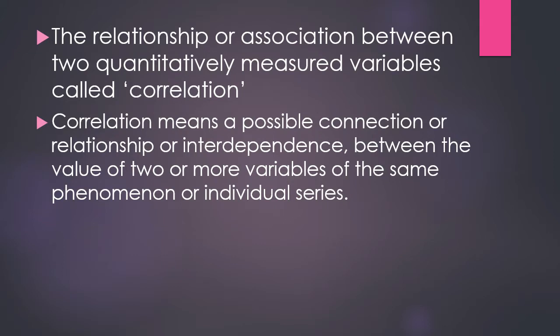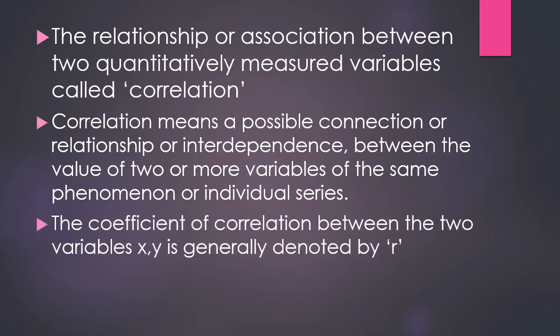Correlation indicates the strength of a relationship — for example, the steady relationship between height and weight. When a change in one variable results in a positive or negative change in another variable, that relationship is known as correlation. The coefficient of correlation between two variables x and y is generally denoted by r or ρxy.